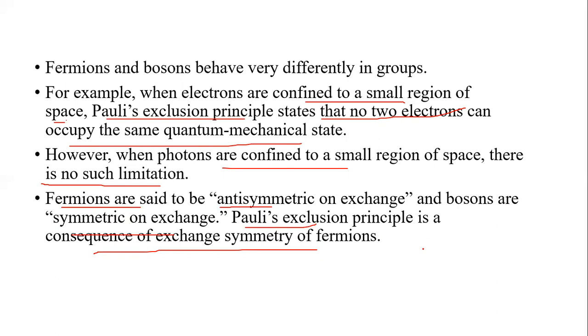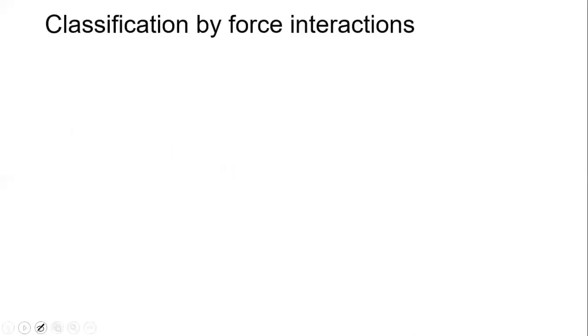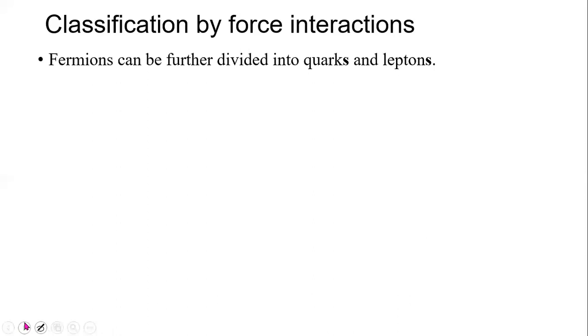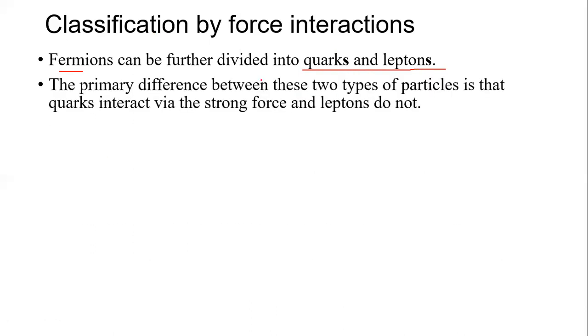Another important classification is by force interaction. Fermions can be further divided into quarks and leptons. The primary difference between these two types of particles is that quarks interact via the strong nuclear force, while leptons do not.